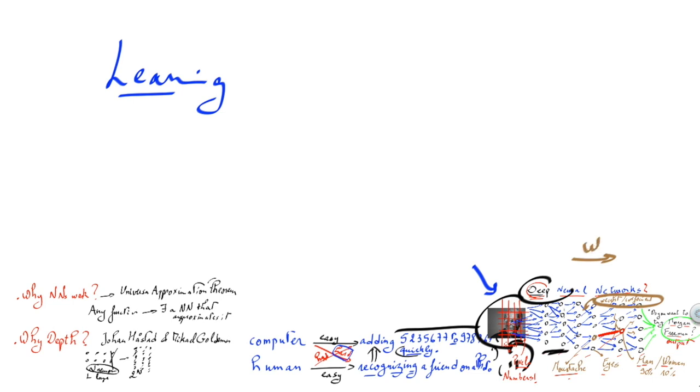What the learning algorithm of a neural network is about is setting weights, so those coefficients, so the synaptic weights between neurons. This is the important thing to understand to have an idea of how learning works for neural networks. But the goal of this video was not to talk about learning. The goal was just to say why neural networks work at the first place—this is something you can understand from the universal approximation theorem—and why depth is important. For this, I suggest you get an intuition from Håstad and Goldmann's paper.